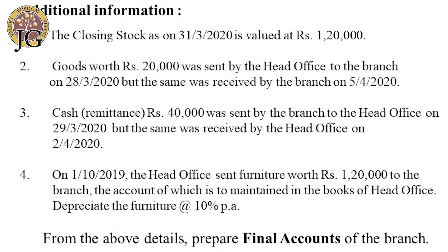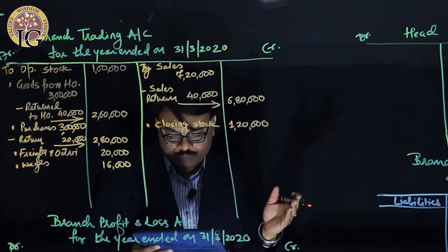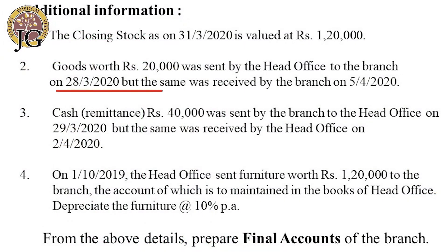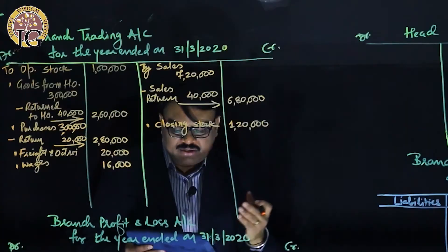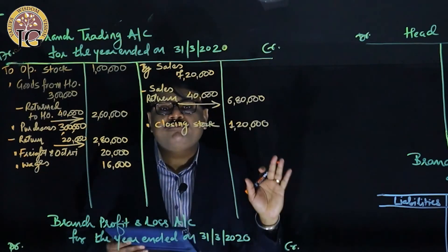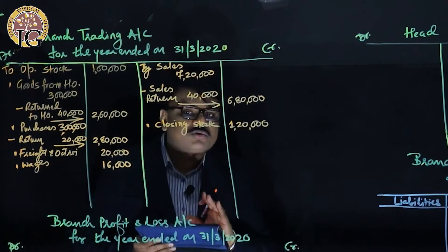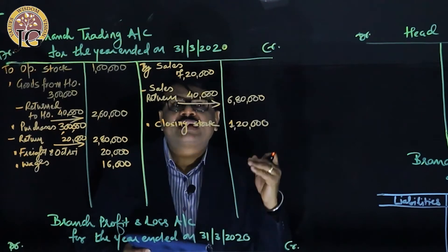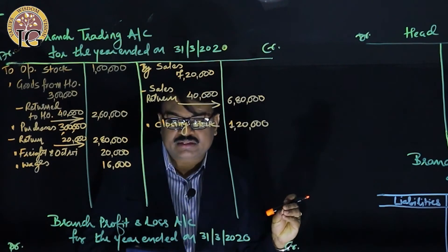The second adjustment: goods worth ₹20,000 were sent by the head office on 28th March but received by the branch on 5th April 2020. As on 31st March 2020, the goods have not been received — they are goods in transit. Since no transaction has taken place from the branch's perspective, there will be no entry for this adjustment in the branch books.